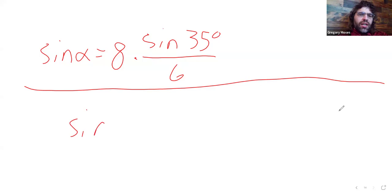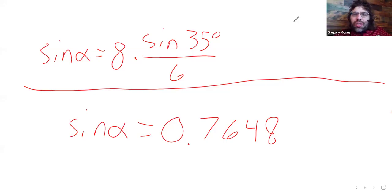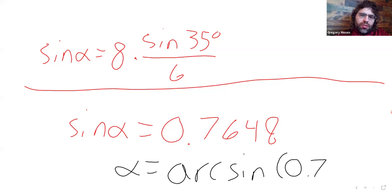So the sine of alpha is this. Again, I plugged stuff into the calculator off screen. And this is not something we can solve in our head, but we can use the arc sine to solve it. And we get alpha equals 49.889 degrees.